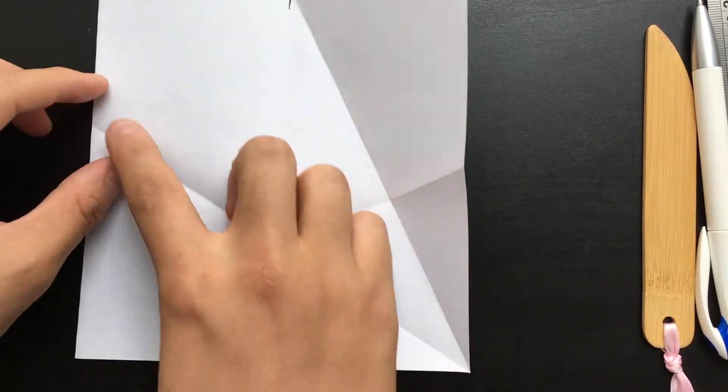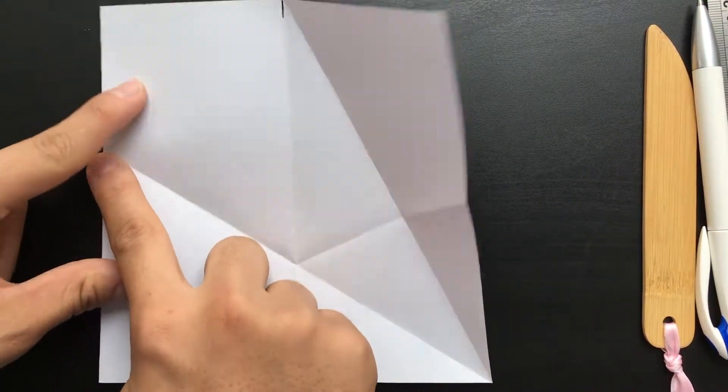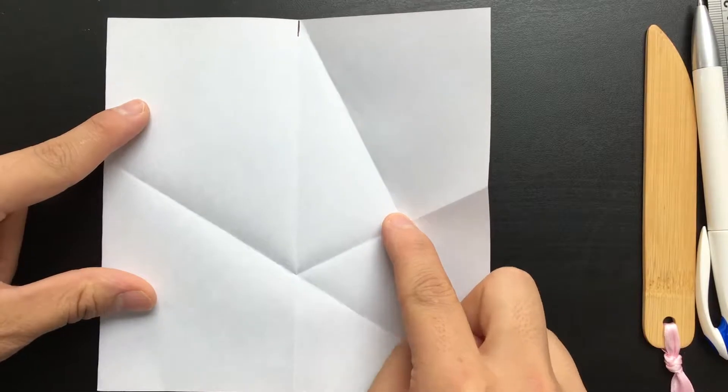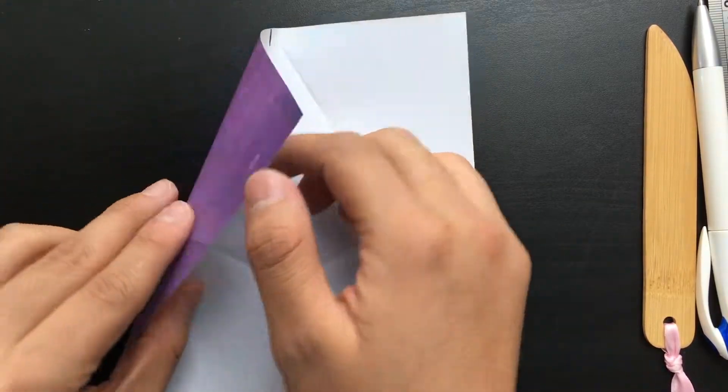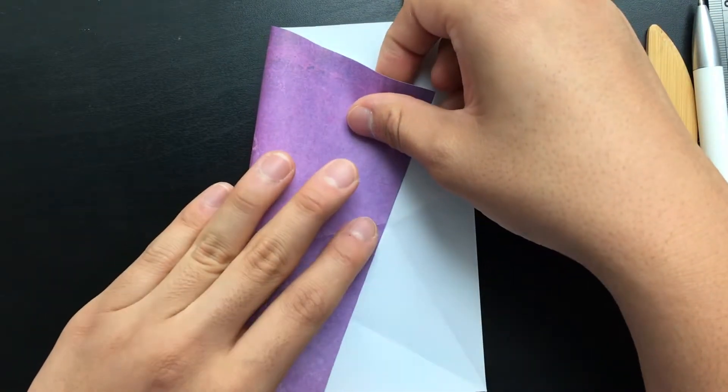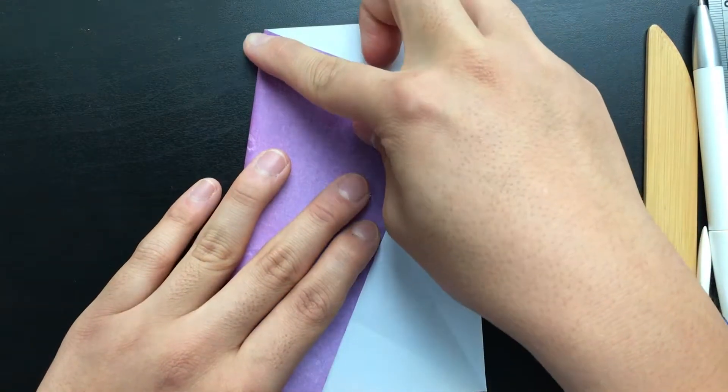So what we're going to do is take this point right here where the crease meets the edge to that intersection, and the fold should meet the top midpoint. This fold will take some adjustment and practicing, and you're probably not going to get it right on the first try.